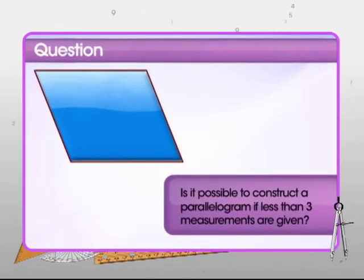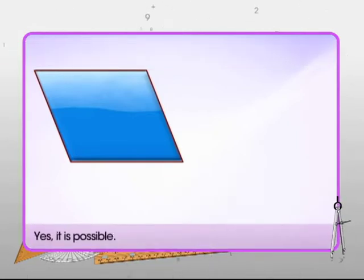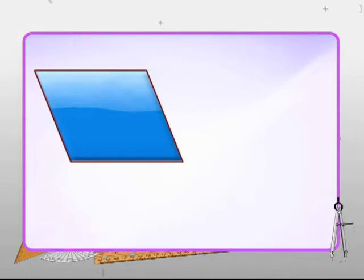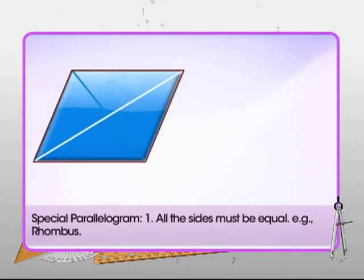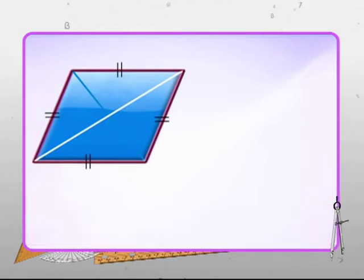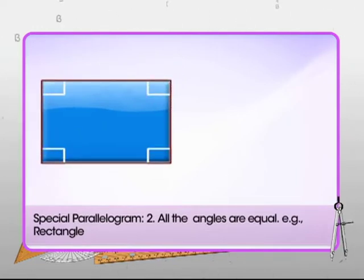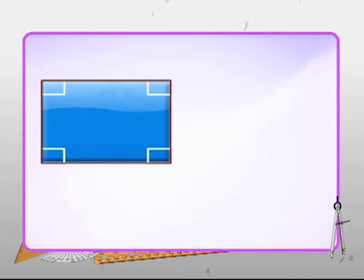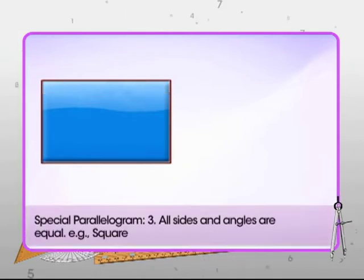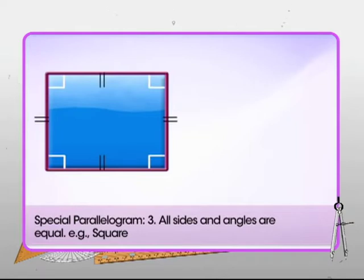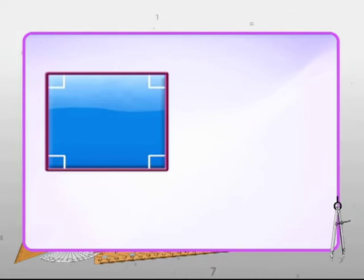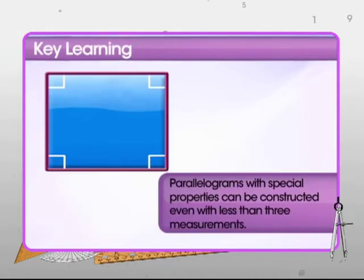Is it possible to construct a parallelogram if less than three measurements are given? The answer is yes, but the parallelogram must have all sides equal, as in a rhombus, or all angles equal, as in a rectangle — in these cases only two measurements are needed. If all sides and angles are equal, as in a square, then only one measurement is required. Such properties of special parallelograms make their construction possible with fewer measurements.